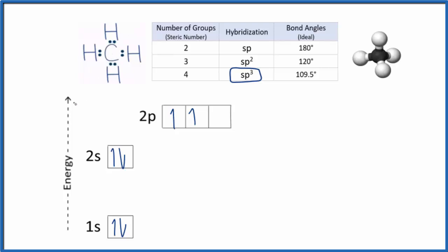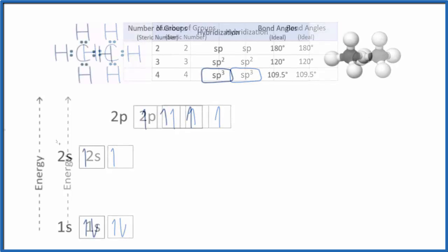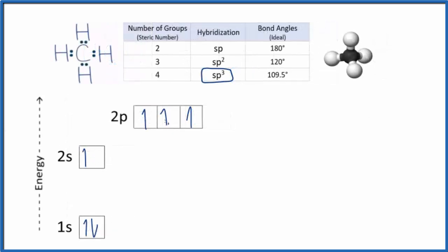We need something to explain this, and that's hybridization. Since we have this space here, we can promote this electron up. Now we can mix the 2s and the 2p, and that's going to give us hybrid orbitals. We're going to mix this s orbital and these three p orbitals, and that'll give us four orbitals that are all equal.